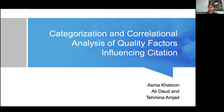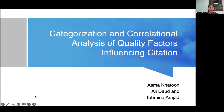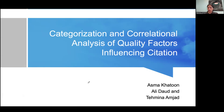Today's topic is mainly about citation analysis. Researchers and scholars are mainly interested in the visibility of their work. In this study, we have done a categorization of the factors that can influence received citations, and we have also worked on some correlational analysis to identify the factors which have an effect on received citations.